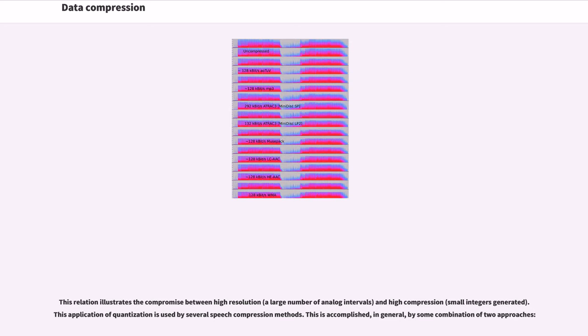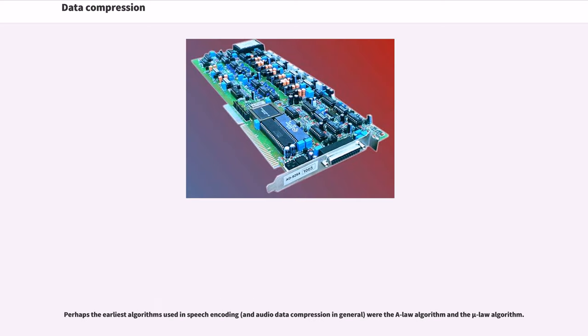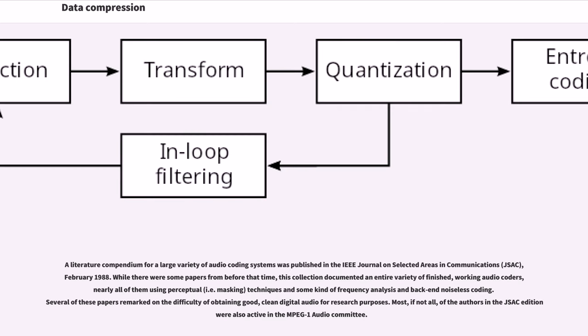Perhaps the earliest algorithms used in speech encoding, and audio data compression in general, were the A-Law algorithm and the Mu-Law algorithm. A literature compendium for a large variety of audio coding systems was published in the IEEE Journal on Selected Areas in Communications (J-SAC) in February 1988. While there were some papers from before that time, this collection documented an entire variety of finished working audio coders, nearly all of them using perceptual (i.e. masking) techniques in some kind of frequency analysis and back-end noiseless coding.